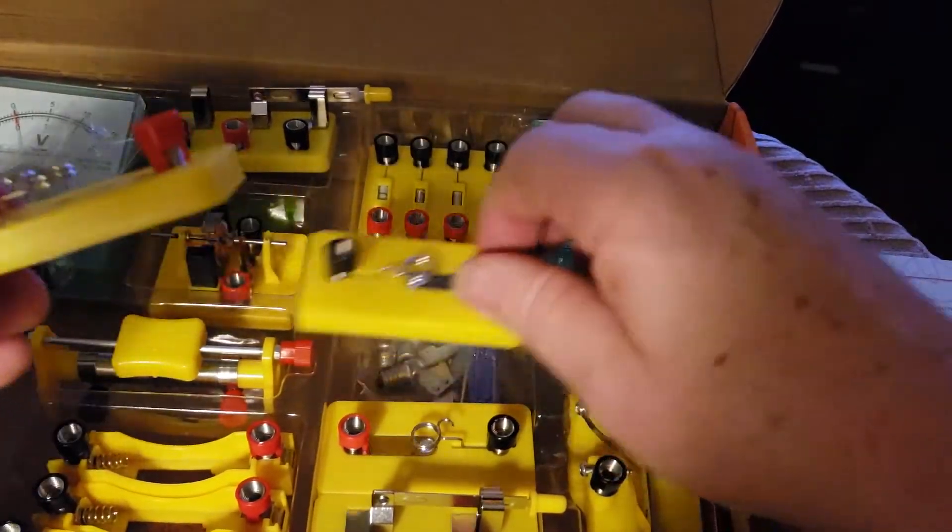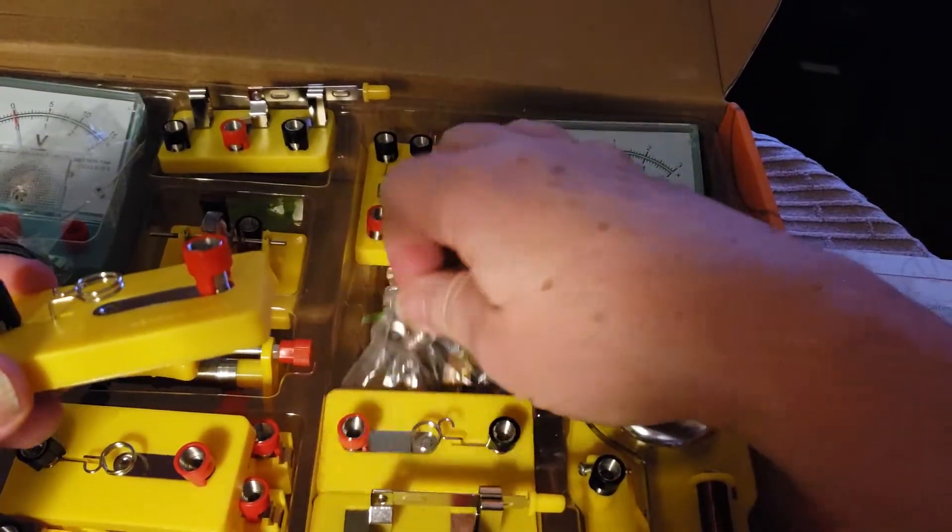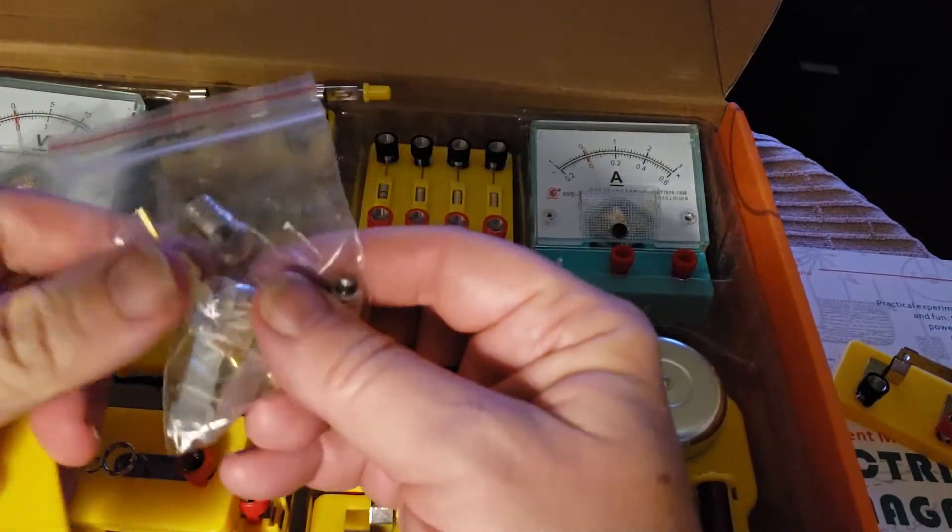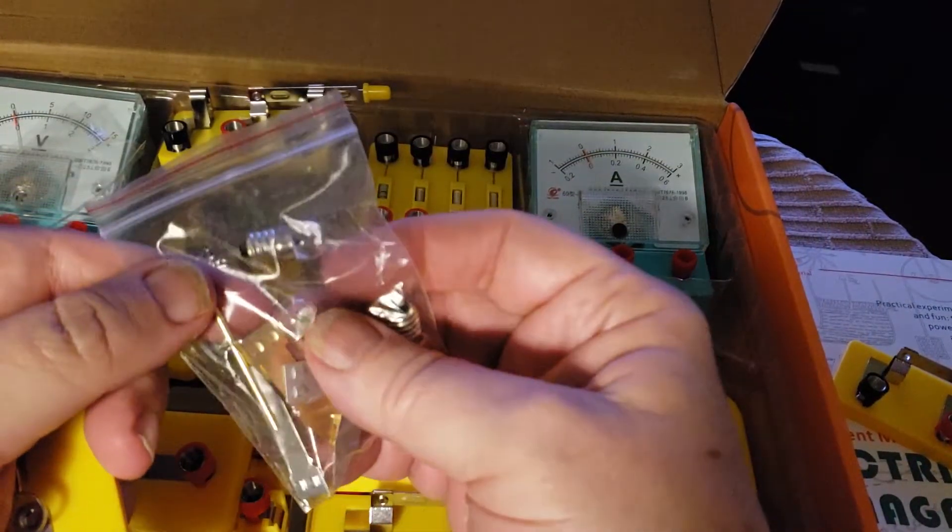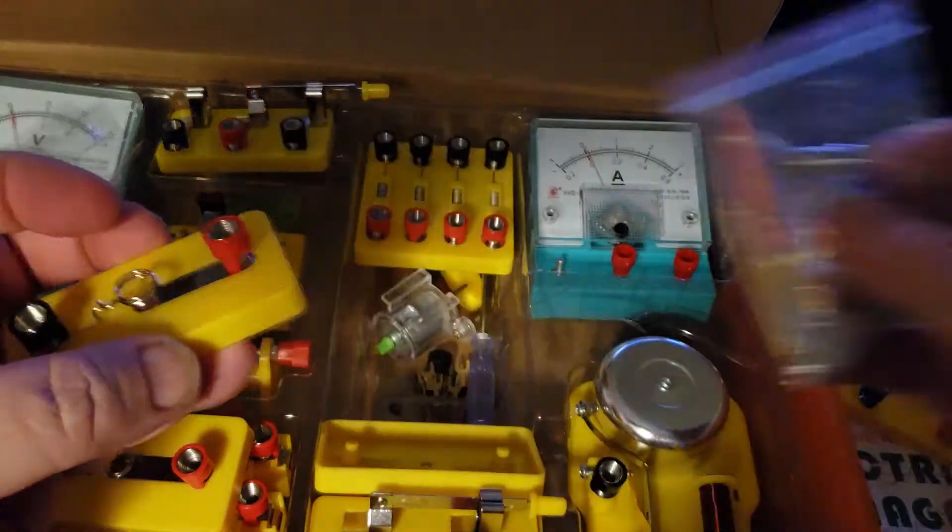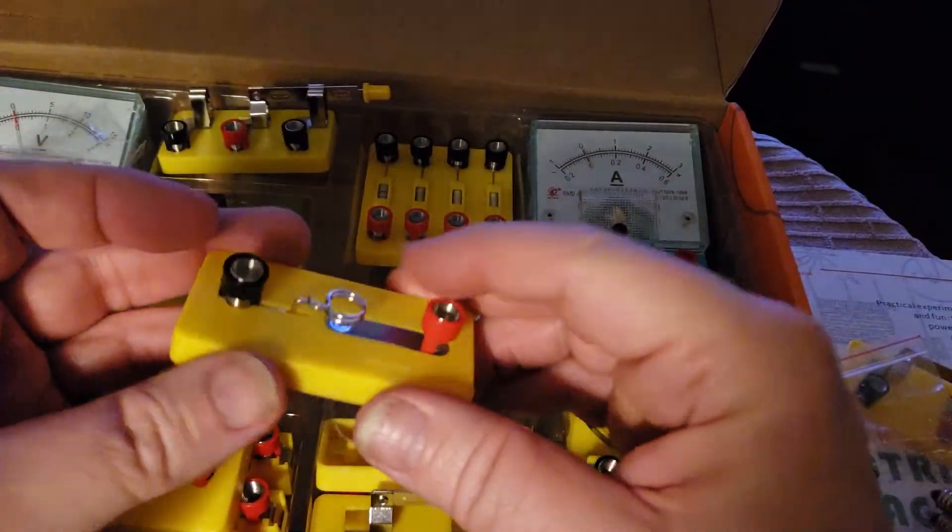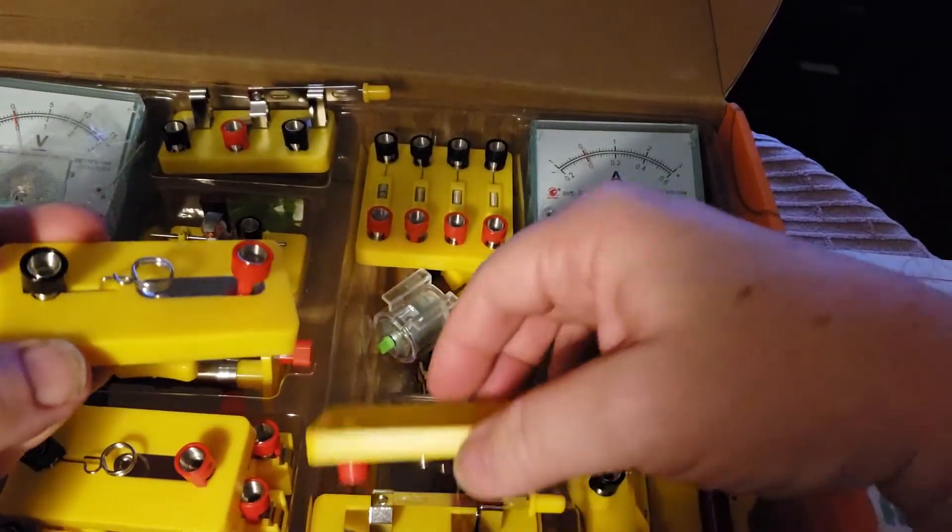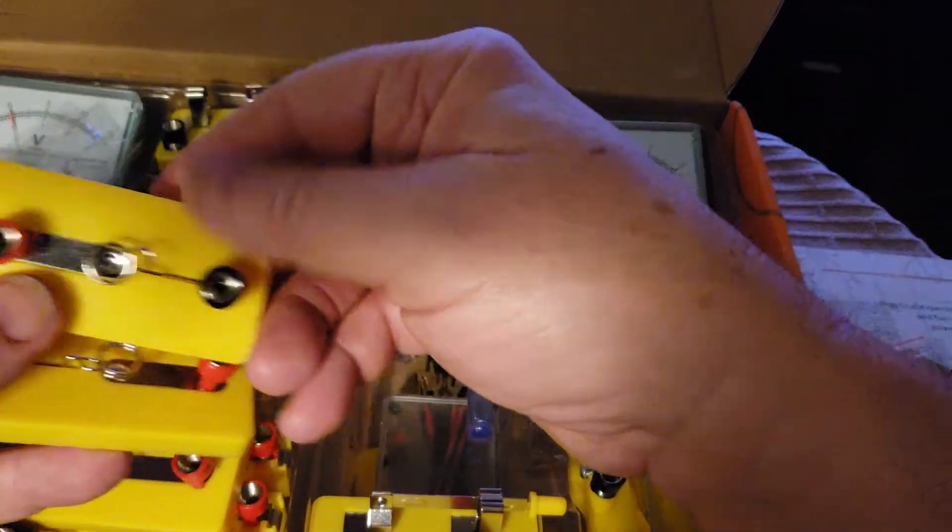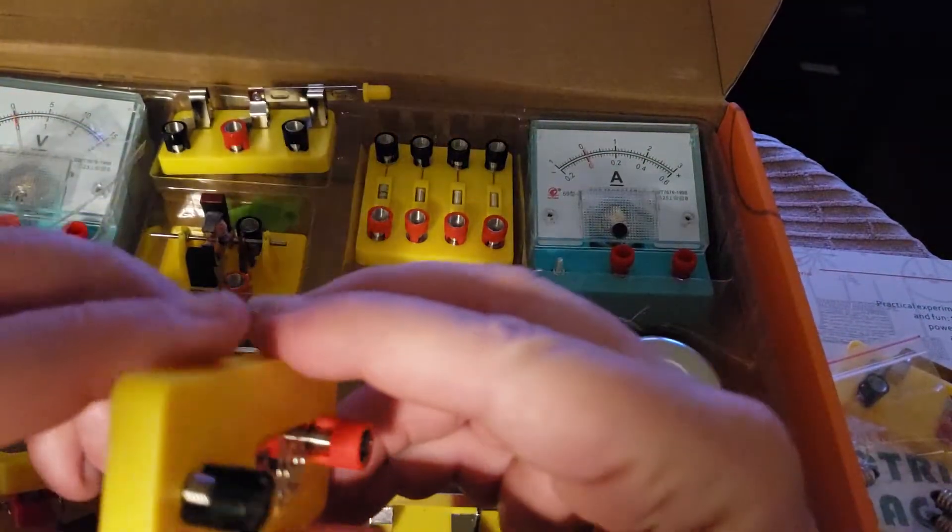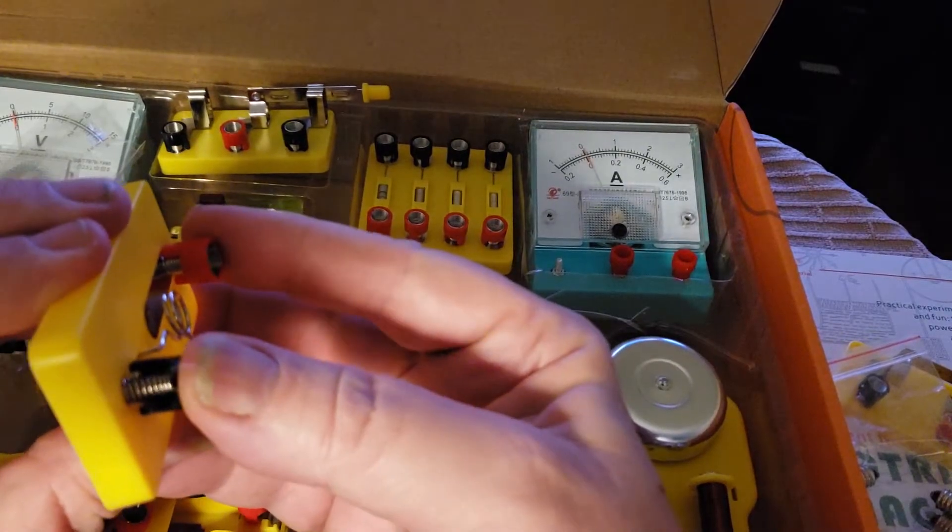These are for light bulbs I guess. They give you a pack of these small light bulbs. They screw in here and then you could have three of them and hook them in series or parallel. It's the same kind of spring connector here.